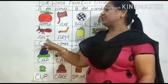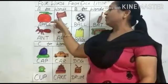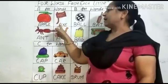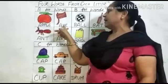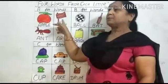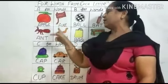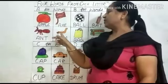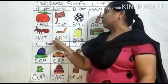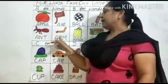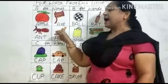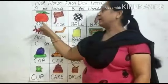Ant means GT. What is this? This is an ant. A-N-T. Ant. What is this? This is an axe. A-X-E. What is this? This is an arm. A-R-M. Arm.